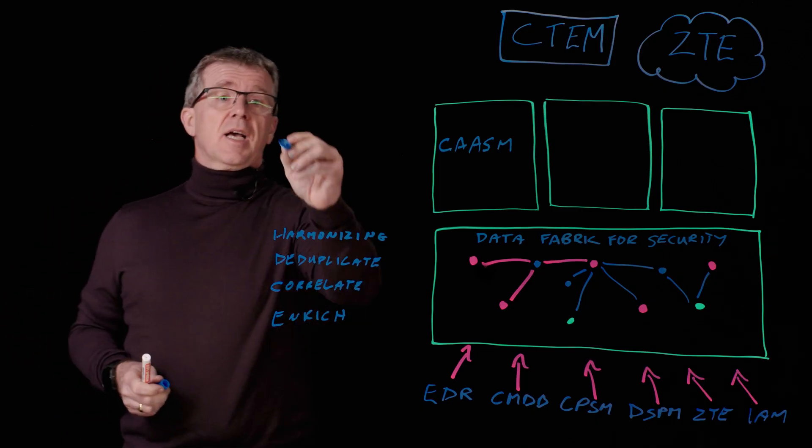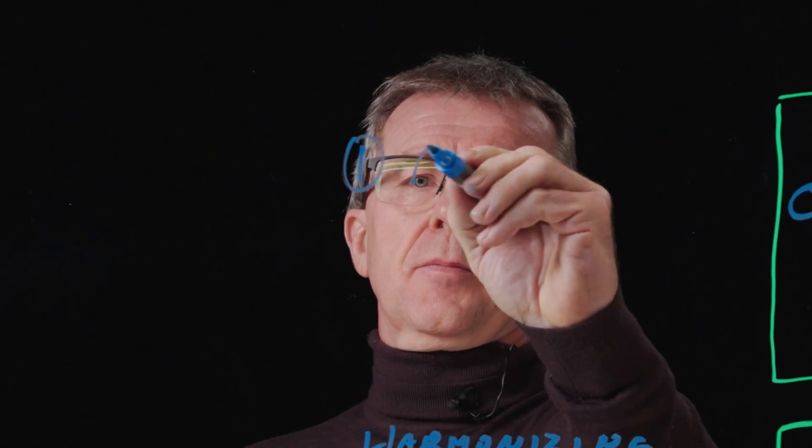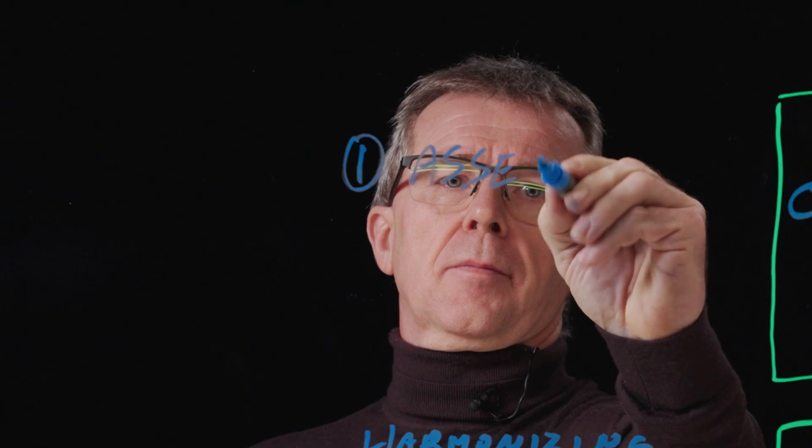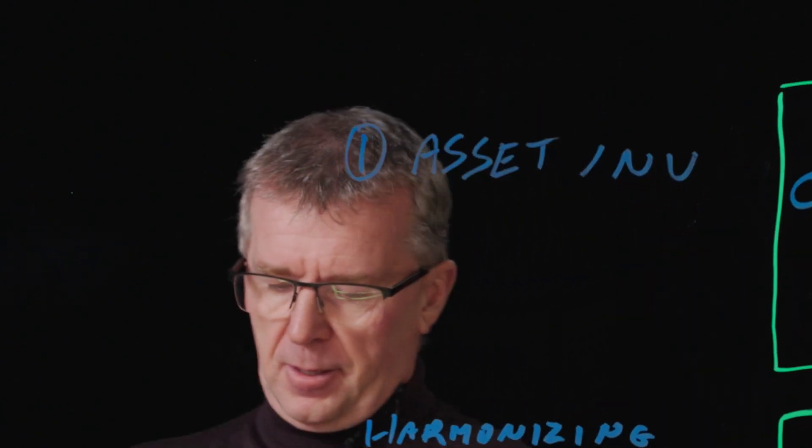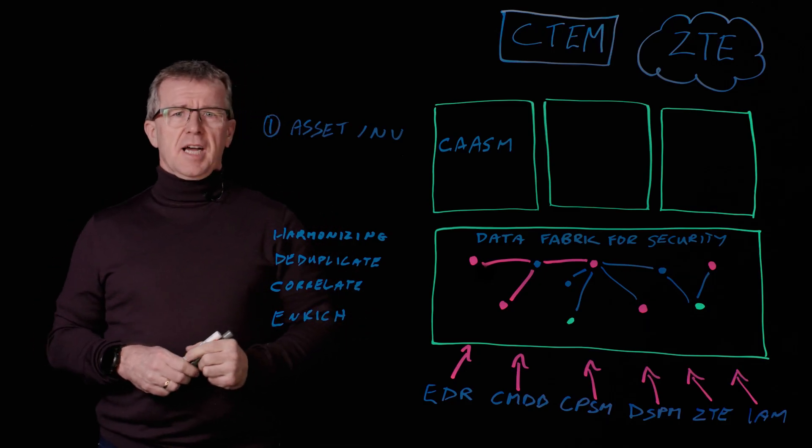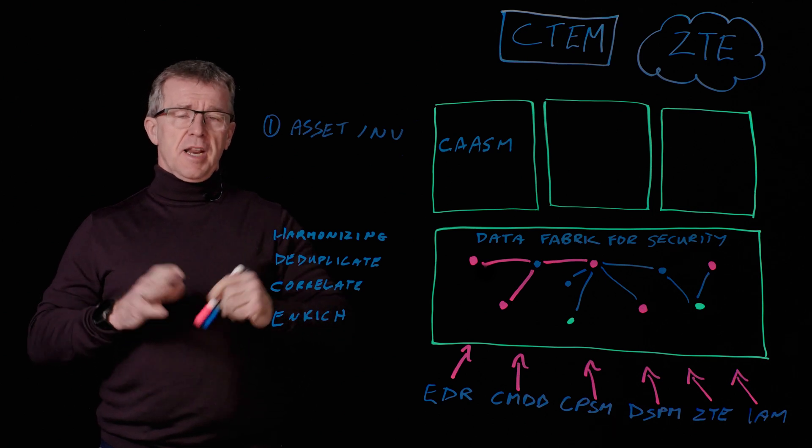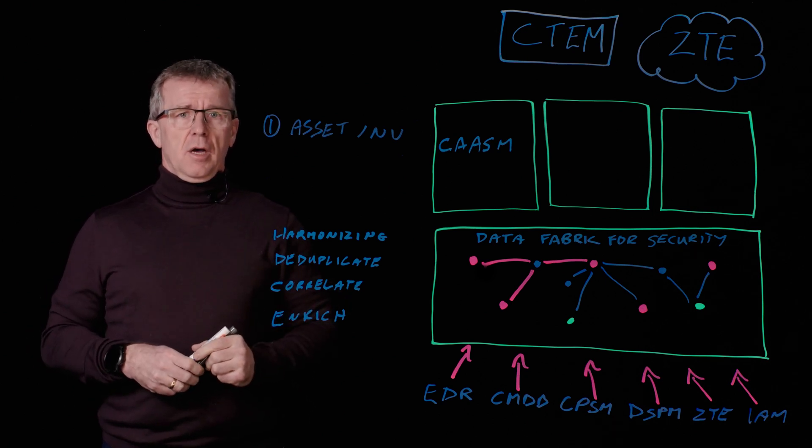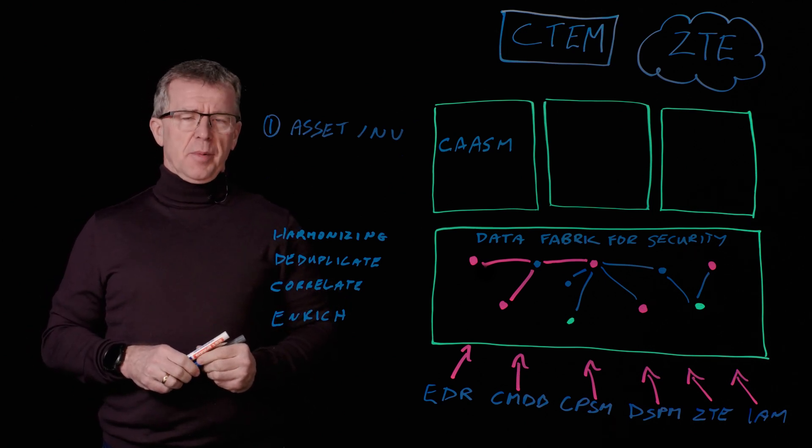So first, asset inventory. The data fabric recognizes all of the data and gives us an enriched, complete view of exactly what we've got in our environment.